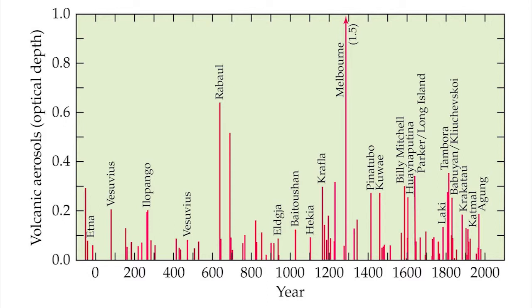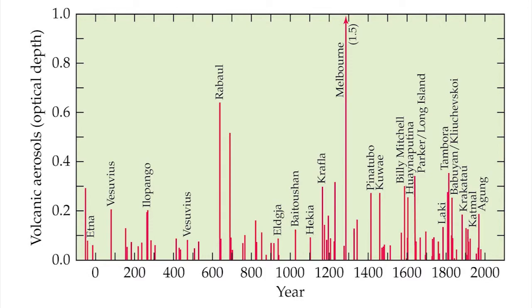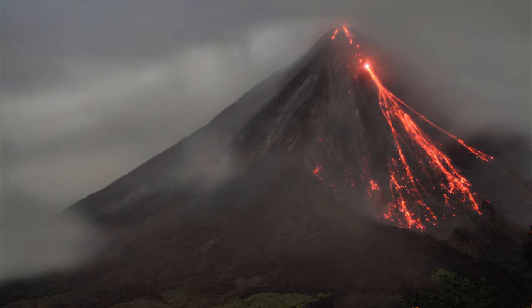Volcanic eruptions as large as Pinatubo occur only every century or so, but smaller yet significant eruptions such as Mount St. Helens and El Chichón occur every decade. All of these eruptions release carbon dioxide, a greenhouse gas that contributes to global warming, as well as sulfur dioxide and fine particles that reflect sunlight and contribute to global cooling. The amount of CO2 released from volcanoes, however, averages about 10,000-fold less than from the burning of fossil fuels.